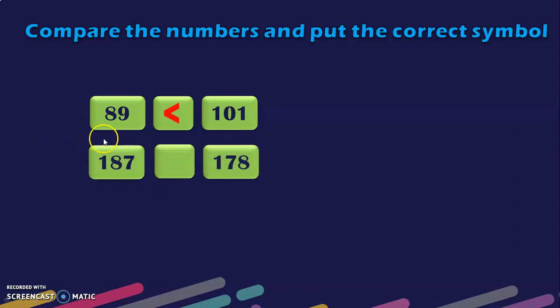Next question: we have two 3-digit numbers, 187 and 178. The rule is to first look at the 100s place — both have 1. So next look at the 10s place, where we have 8 and 7. Since 8 is greater than 7, 187 is greater than 178.